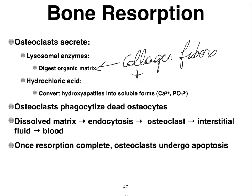We also have osteocytes that need to be taken care of, and the osteoclasts can phagocytize those osteocytes. Interestingly, osteoclasts commit suicide by means of apoptosis when they have completed these various processes that sum up bone resorption.